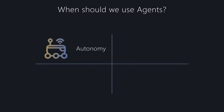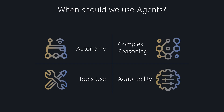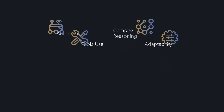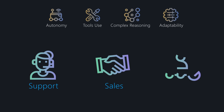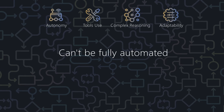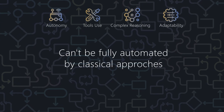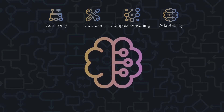When should we use agents? Agents are ideal when we need autonomy, complex reasoning, tool use, and adaptability. Think of processes like customer support, sales funnels, employee hiring, and so on. These are examples of complex use cases that can't be fully automated by classical approaches — they require a level of intelligence that is better suited for AI agents.